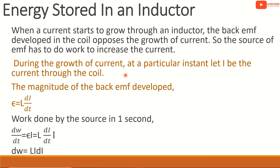The work done is dW/dt equal to E times I. Writing the power as voltage times current gives E times I. Substituting the expression for E using dI/dt, we get dW equal to L·I·dI.